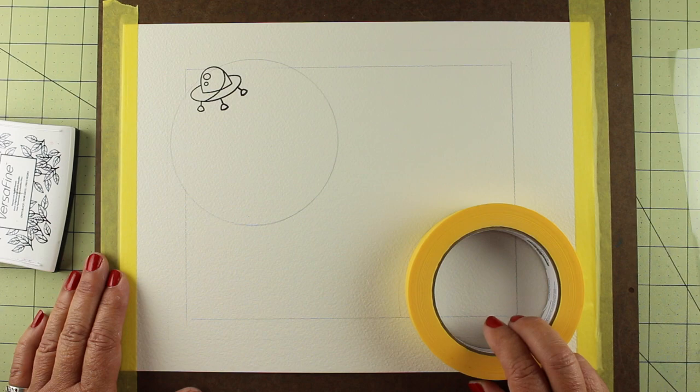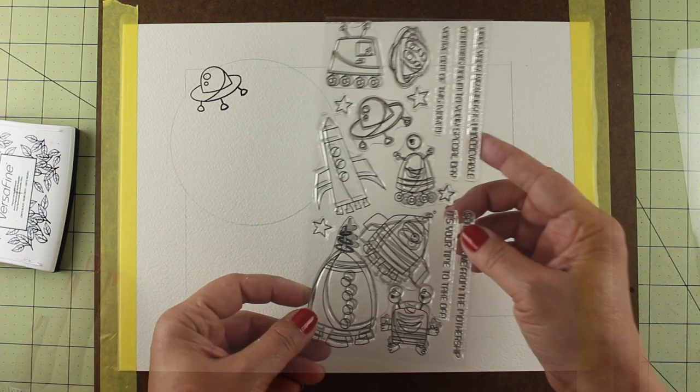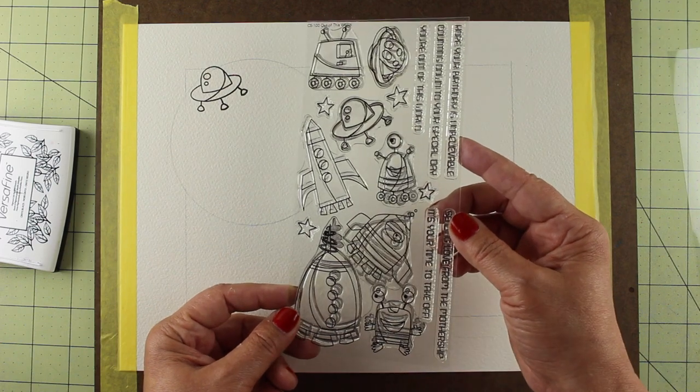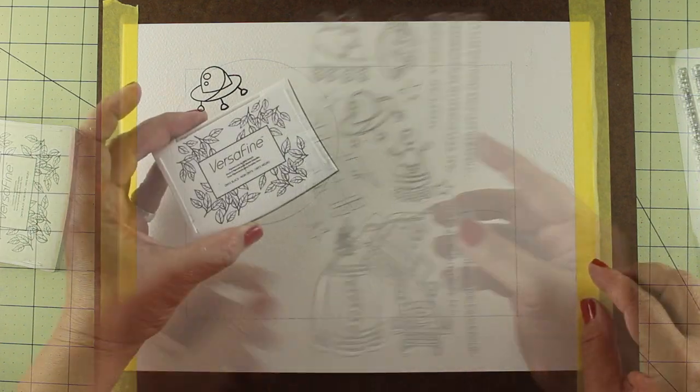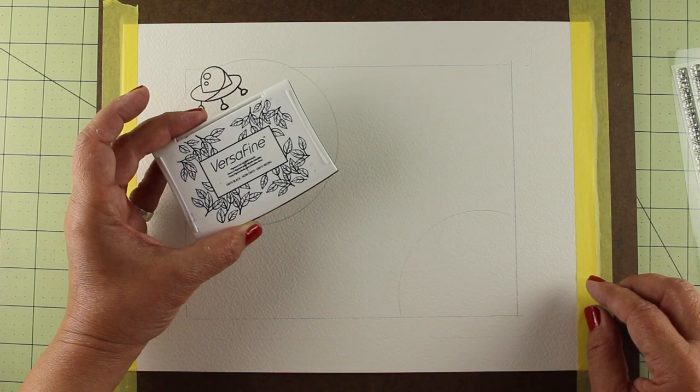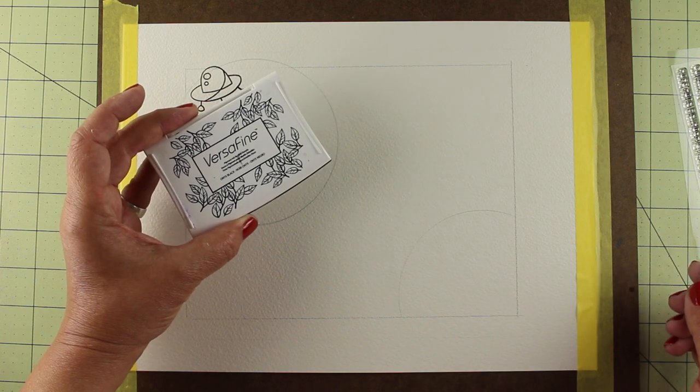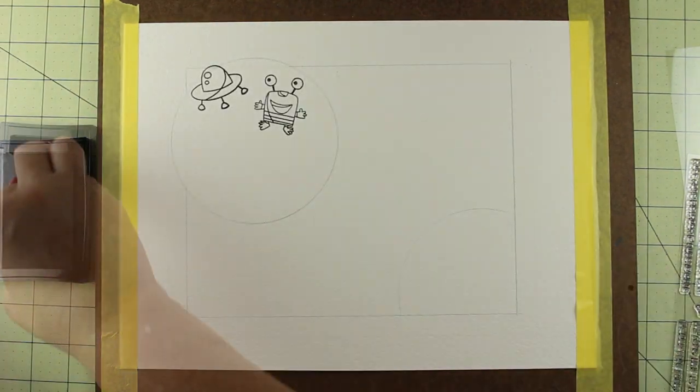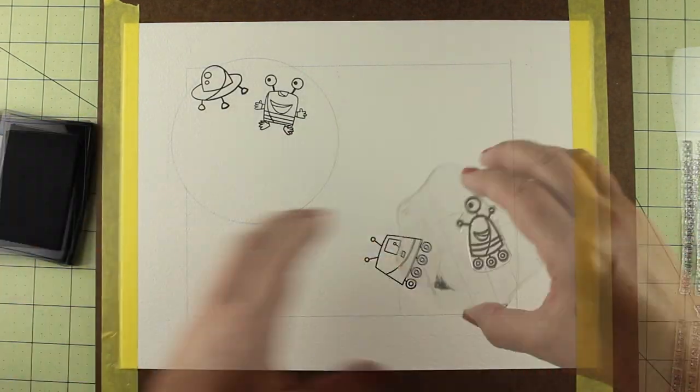I took just a simple roll of tape and made a couple of planets, and now I've got my stamps ready to go. These are from My Favorite Things called Out of This World. I'm going to stamp them with some VersaFine ink because I'm using a water-based medium. You want to make sure whatever medium you're using is compatible with the paper and ink you have chosen.